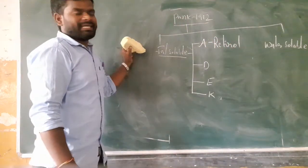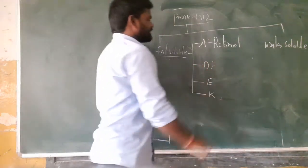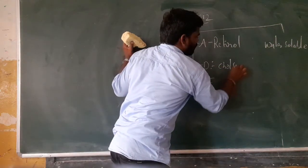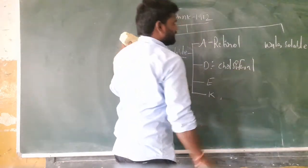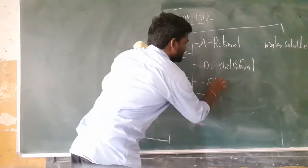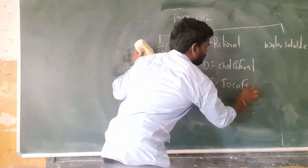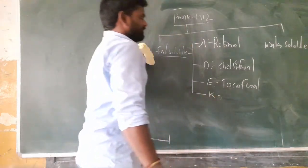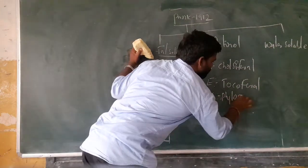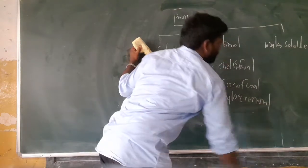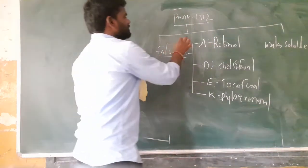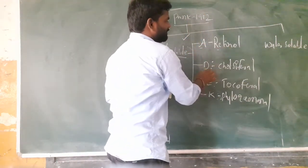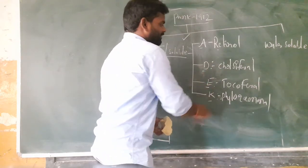The scientific name of vitamin D is calciferol. The scientific name of vitamin E is tocopherol. The scientific name of vitamin K is phylloquinone. So, to summarize: vitamin A — retinol, vitamin D — calciferol, vitamin E — tocopherol, vitamin K — phylloquinone.